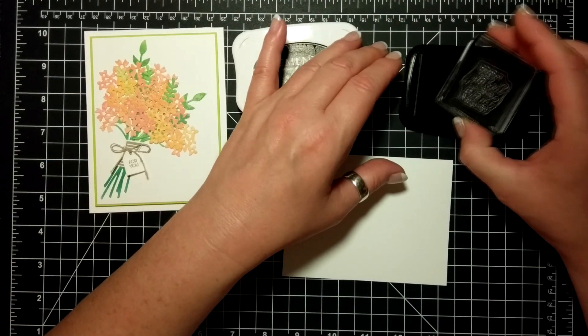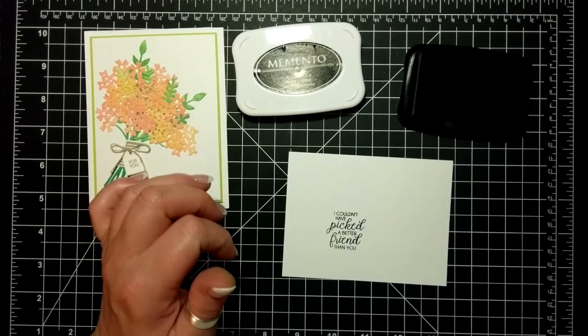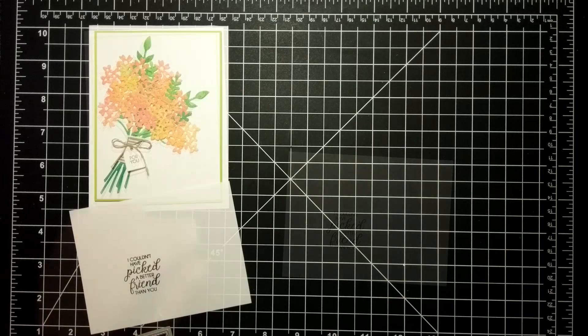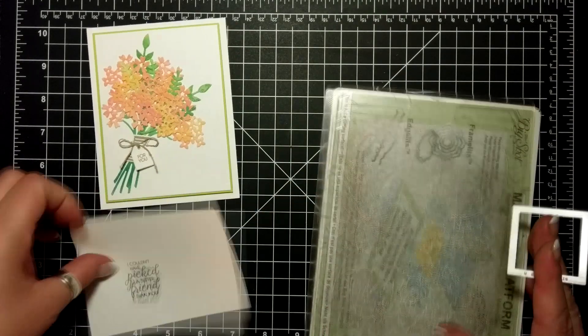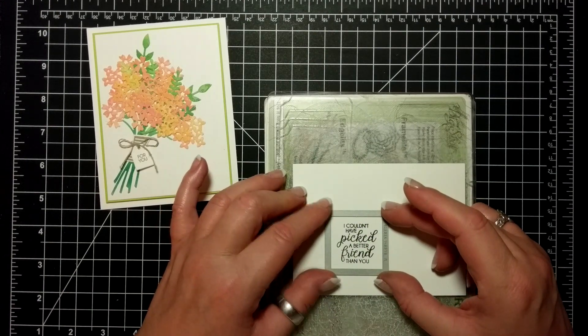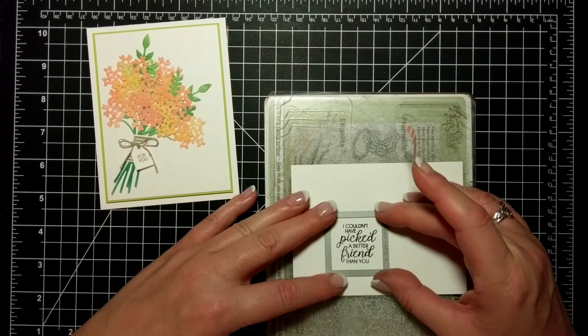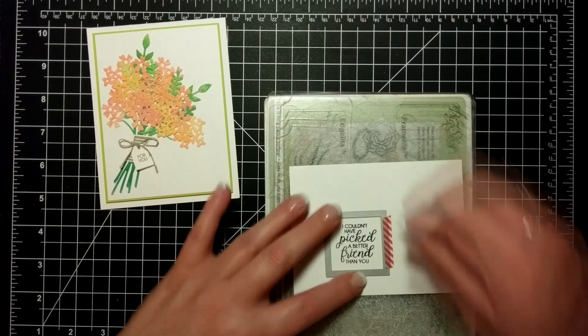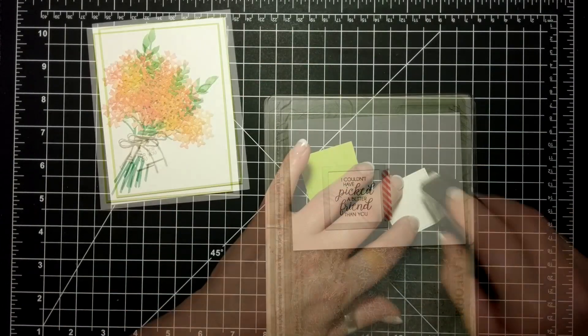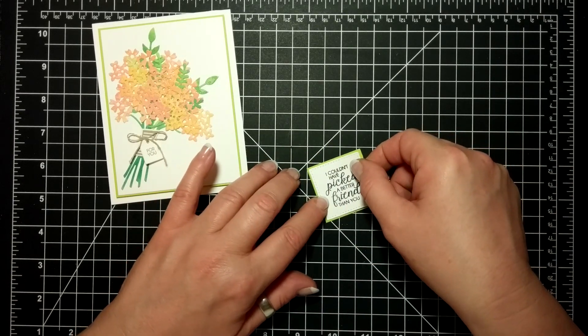I have stamped with my Memento Black the sentiment 'I couldn't have picked a better friend than you.' I used my Stitched Shape Framelits in the square variety for the sentiment, and then I adhered that to a just—I cut down a little piece of Lemon Lime Twist.